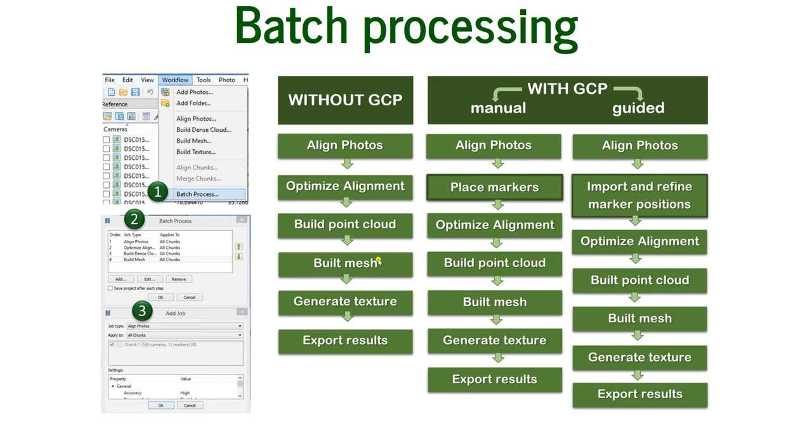I prepared for you a scheme for batch processing without ground control points and with ground control points. With ground control points, you have manual and guided options. Manual is when you place markers manually, and guided is what we are going to be using—we import the marker positions and then just refine them. The rest of the queue looks the same.